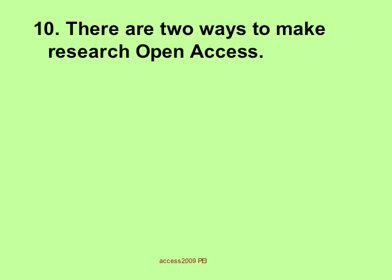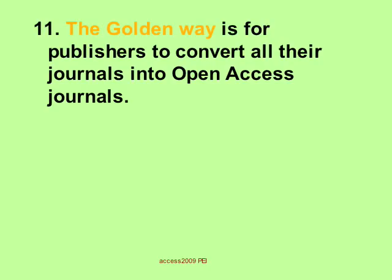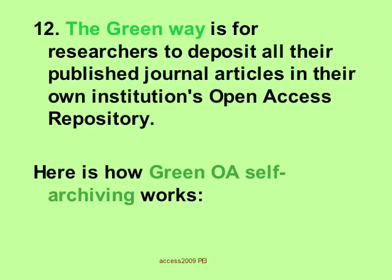There are two ways to make research open access. The golden way is for publishers to convert all their journals into open access journals — we call this gold open access, or gold OA. The green way is for researchers to deposit all their published journal articles in their own institution's open access repository — that's green OA — and here is how green OA self-archiving works.